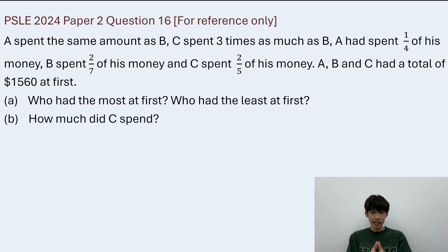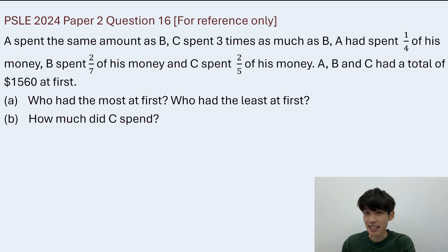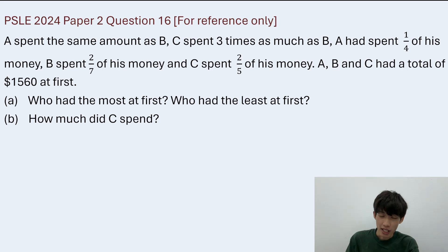For question A, it asks who has the most at first and who has the least at first. And for part B, it asks how much did C spend?